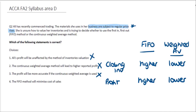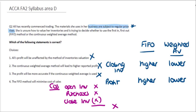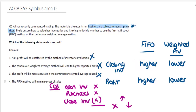This leads us to the final statement: the FIFO method will minimise cost of sales. If we think about what goes into cost of sales — opening inventory plus purchases minus closing inventory — that closing inventory figure reduces cost of sales. Since FIFO gives us higher closing inventory, we end up with a lower cost of sales figure. Therefore the fourth option is the correct answer.